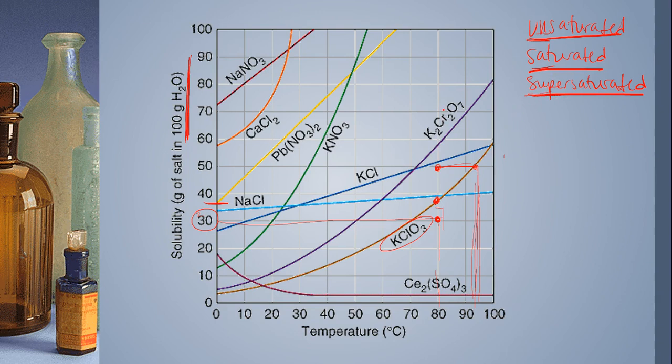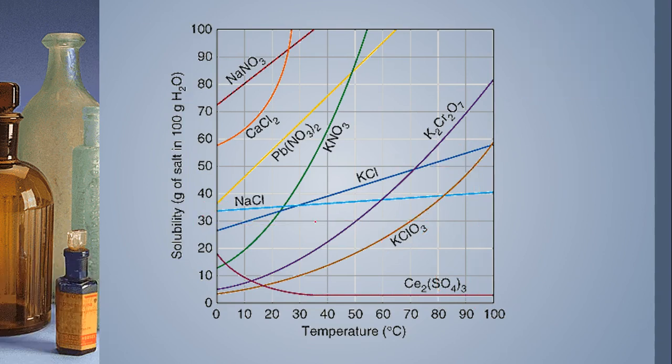Another thing that you could do with graphs like this is identify things that are least soluble or most soluble. For example, the substance on here that is least affected by temperature change is NaCl because it keeps the flattest line as the temperature goes up. Which one is most affected by temperature change? Then we need a steeper slope. The steepest slope might be KNO3 or CaCl2. If I had to choose, I would pick KNO3 as the one that is affected the most by increase in temperature.